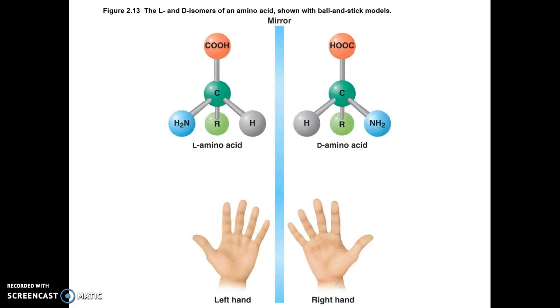Now, the L and D isomers of an amino acid are shown here. Now, what's really interesting about this is that you can have L amino acid help your body be nutritious. D amino acid could potentially destroy your body. Their chemical structure is identical. However, the arrangement of their molecules are mirror images of each other.